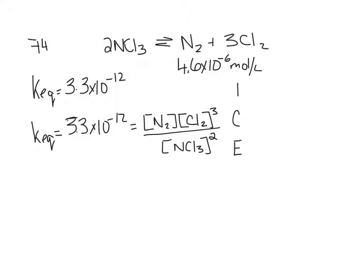So if we have an ice table, do we know how much initially we have of NCl3? We have some amount, right? Some amount, what should we call it? X. We can't say it's X because change is our X, so we can't call the initial amount X. Y.